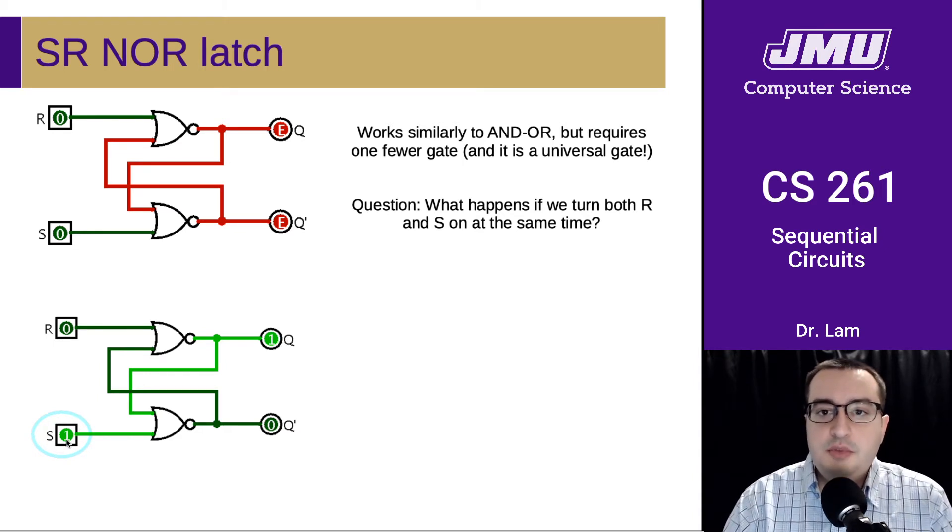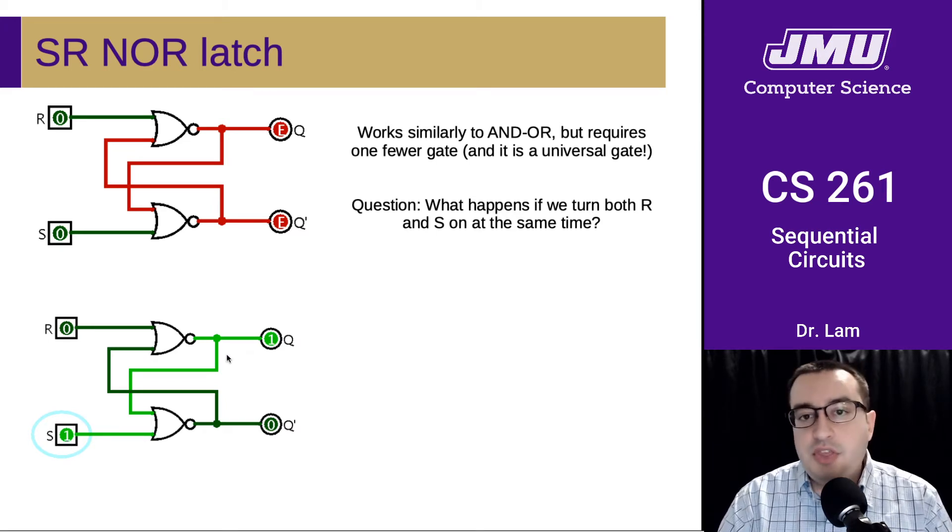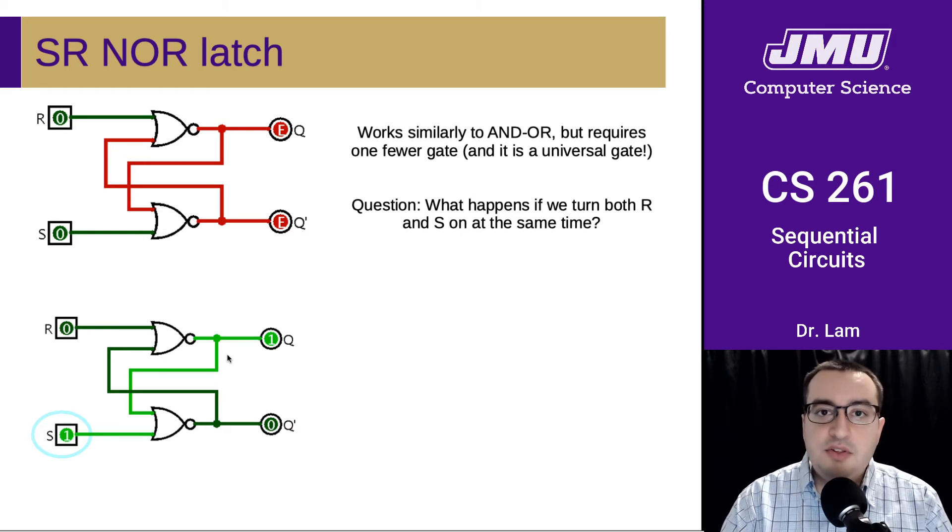This is similar to what happened with the last circuit. We turn on the set bit, and the output turns on. In general, the behavior is similar to last time. If we turn off S, Q would stay on and Q prime would stay off. If we turned on R, this would become 0 and this would become 1. Q prime is sort of an opposite of Q.